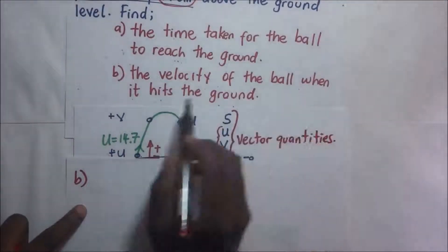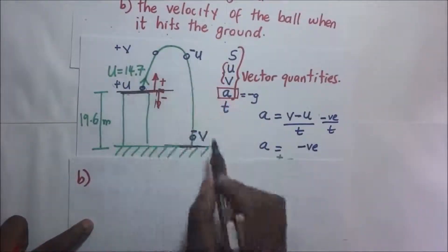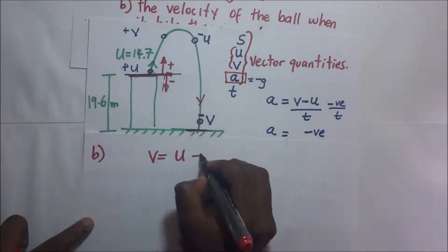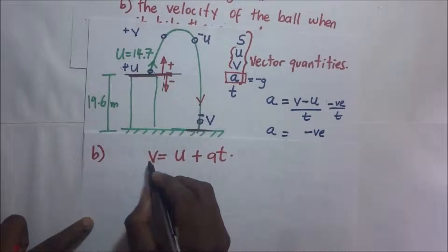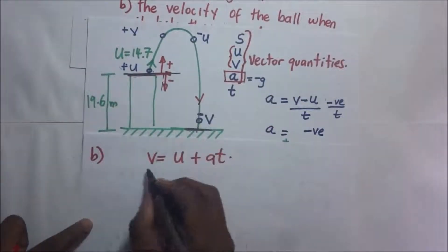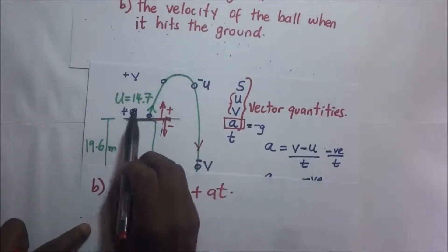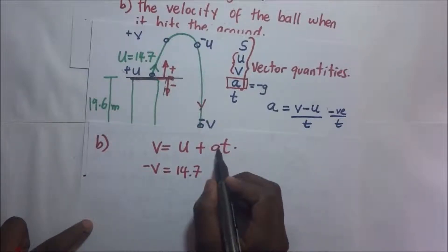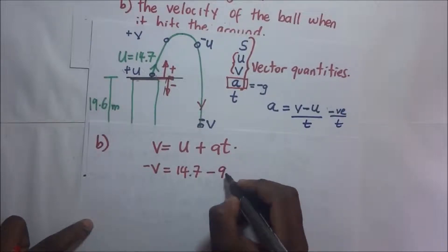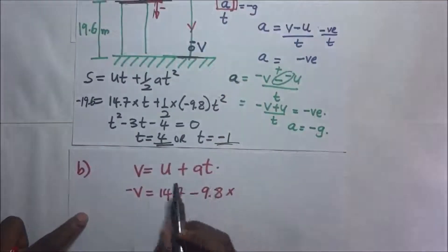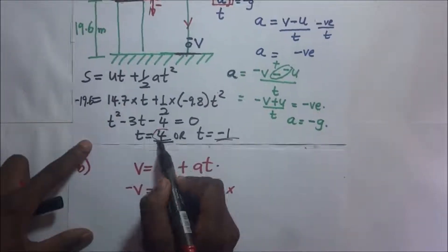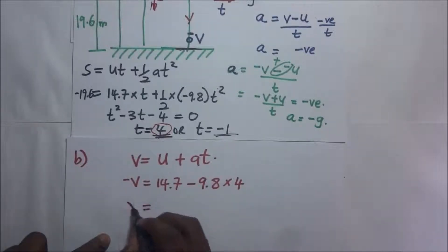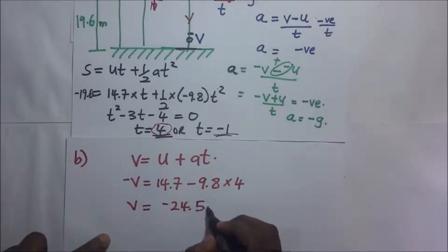For Part B, we need to find the velocity of the ball when it hits the ground. As it hits the ground it is moving downward, so the final velocity will be negative. Using v = u + at: negative v = 14.7 + (−9.8) × 4. Calculating this gives a value of v equal to negative 24.5 meters per second.